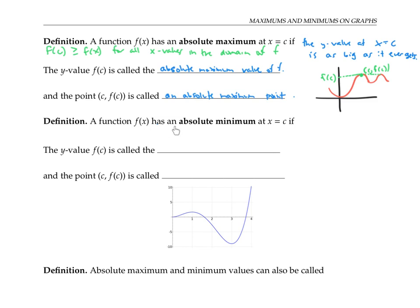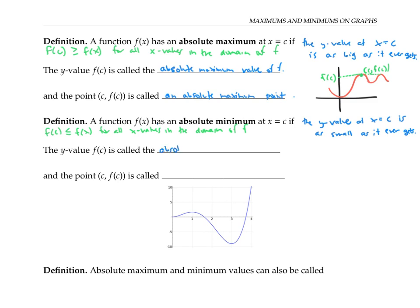A function f of x has an absolute minimum at x equals c if the y value at x equals c is as small as it ever gets. We can write this more precisely by saying that f of c is less than or equal to f of x, for all x values in the domain of f. The y value f of c is called the absolute minimum value of f, and the point c, f of c is called an absolute minimum point. In the graph of f of x, f of c is the lowest y value that the graph ever achieves, and the point c, f of c is the point where it achieves this very low y value.